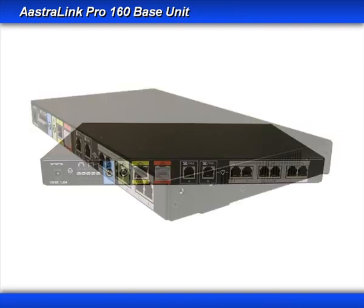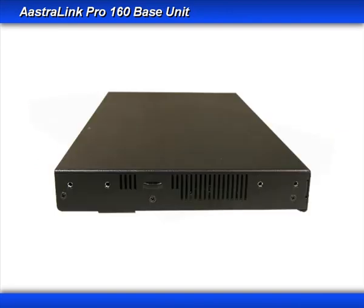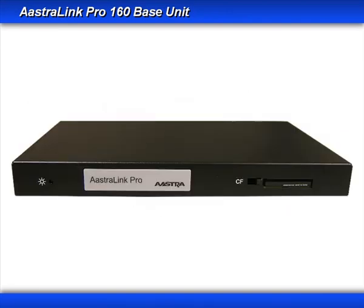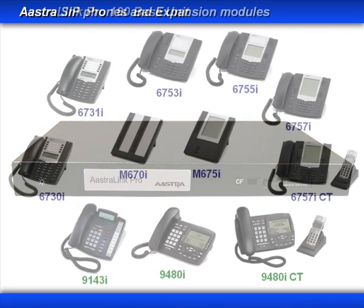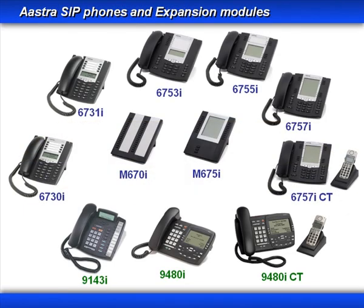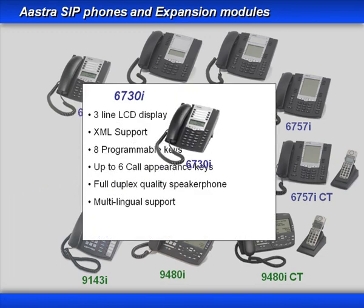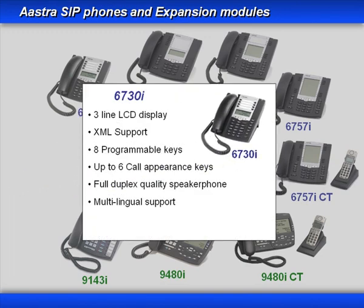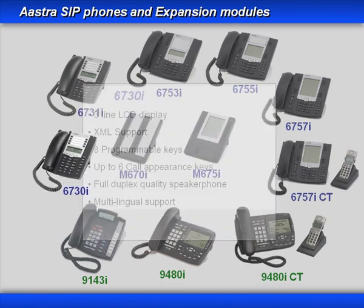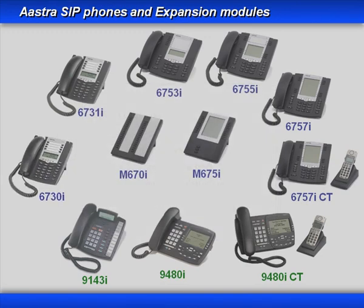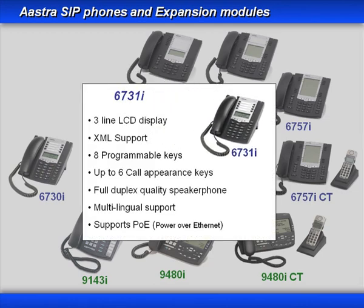With no hidden application license or user costs, the Astralink Pro is a cost-effective, powerful small business communication system that tightly integrates with the following Astra SIP phones and expansion modules: the 6700i series of phones and the M670i and 75i expansion modules, plus the 9000i series of phones.